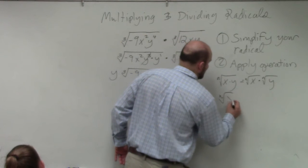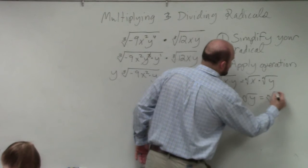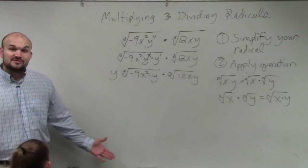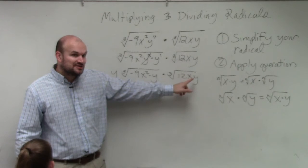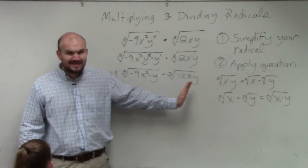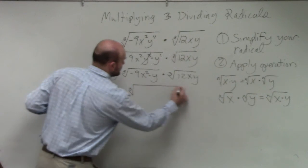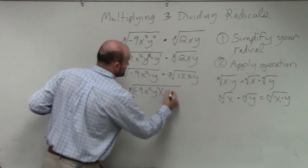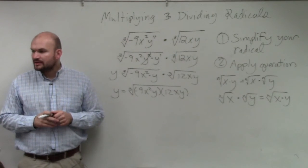If I have the nth root of x times the nth root of y, I can rewrite them as the product under the same index. So if I have the cube root of this expression times the cube root of this expression, I can multiply them as the cube root, and then just multiply them over. Does that make sense? So I can rewrite this as y equals the cube root of negative 9x squared y times 12xy. Do you guys see what I did?